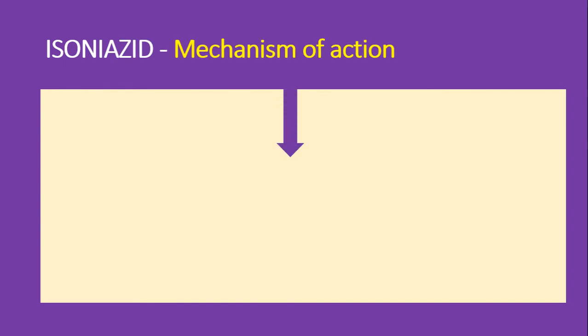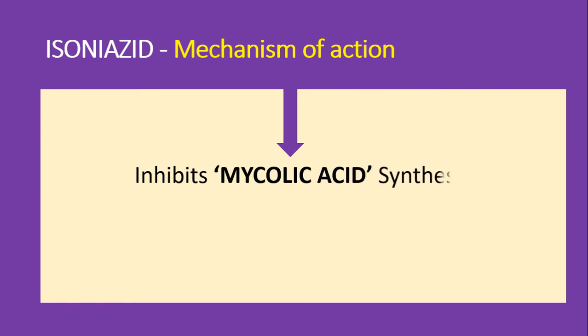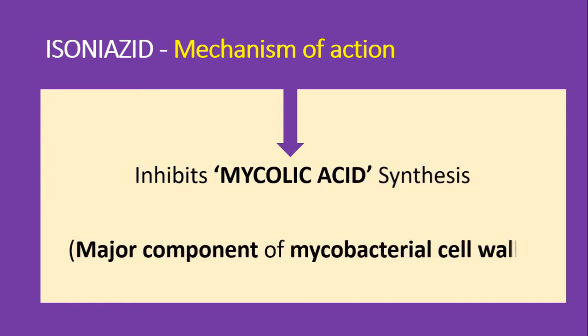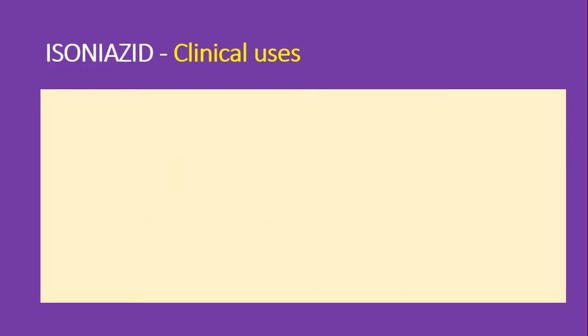The major mechanism of isonia acid is to inhibit the mycolic acid synthesis. The mycobacterial tuberculosis cell wall is made up of a major component called mycolic acid. Isonia acid inhibits mycolic acid synthesis, making the cell wall of mycobacterium very weak, which leads to death of the mycobacterium tuberculosis.